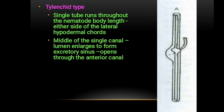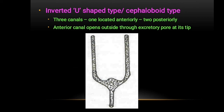Let's look at the tylenchoid type in detail. As seen in the diagram, it has only a single tube, so it is called asymmetrical. The single tube runs through the length of the nematode body, along either side of the lateral hypodermal cords. The middle of the single canal lumen enlarges to form an excretory sinus. It opens through the anterior canal, with no gland cell, and the excretory duct opens via the excretory pore. The example is Tylenchida.